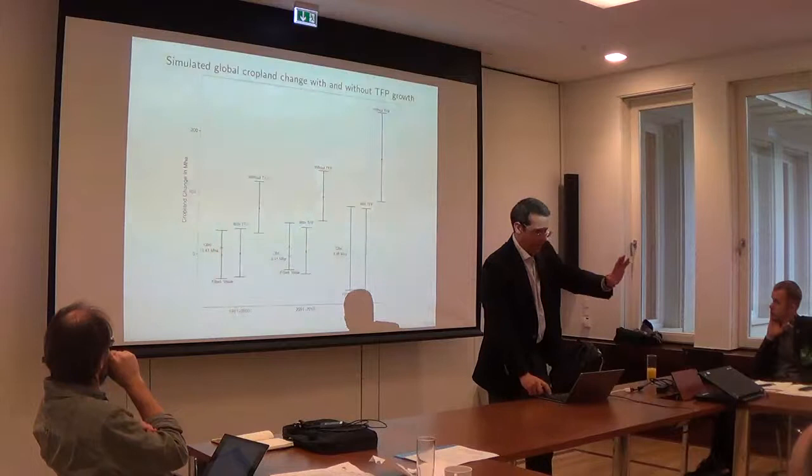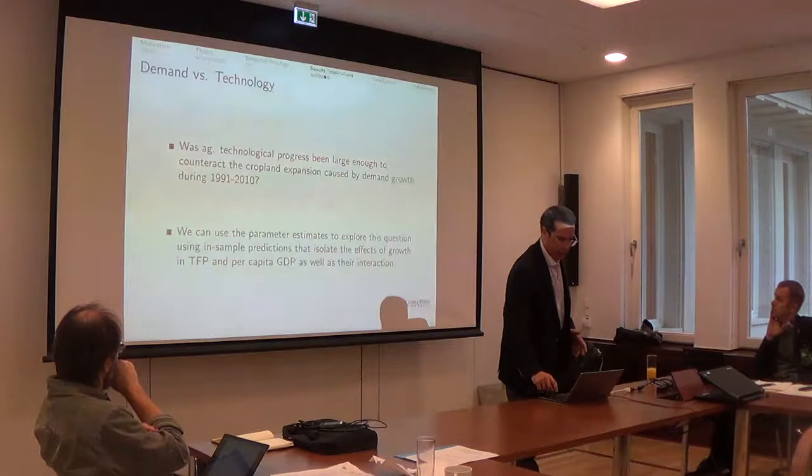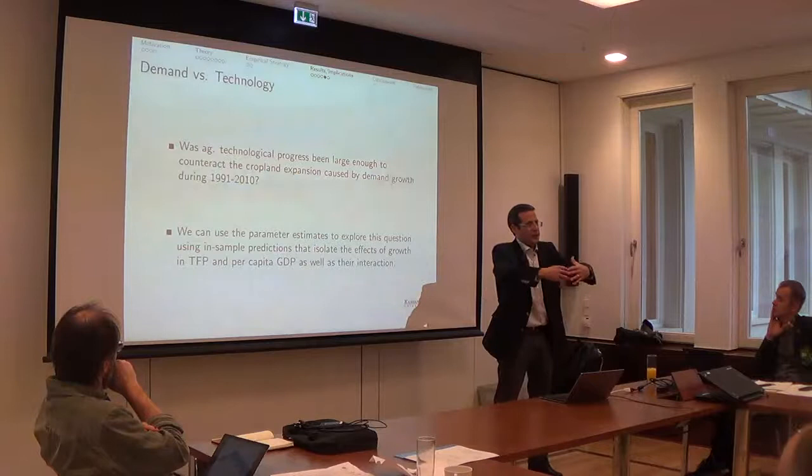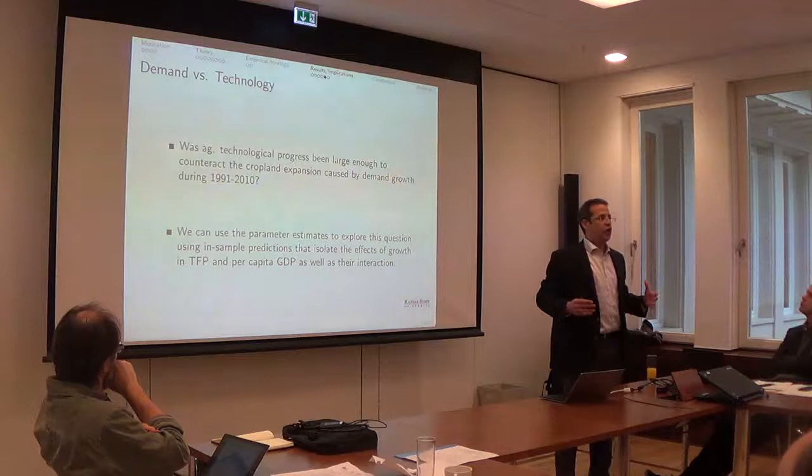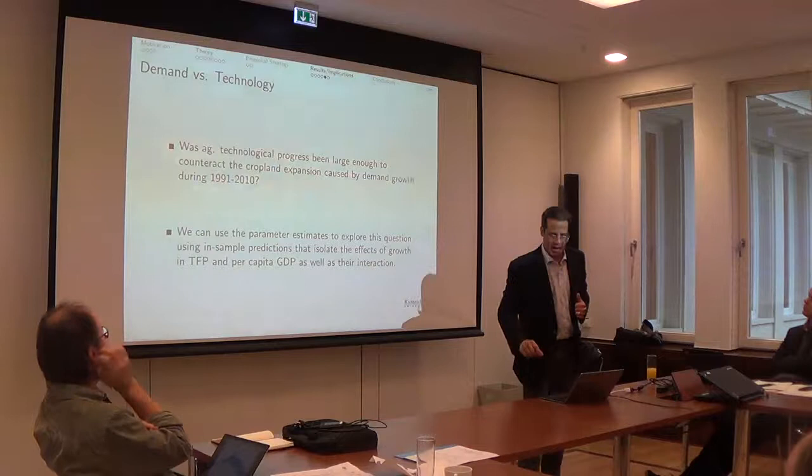And just to wrap up before you call me, that I know you are very close to, I want to deal with the issue of demand and technology, and how these two forces basically go against each other. The Jevon's paradox and Borlaug's hypothesis when you take a global view. And the question here, was agricultural technological progress between 1990 and 2000 large enough to counteract the huge growth in demand that we saw?